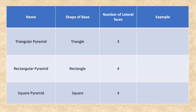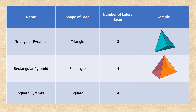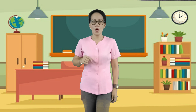Let's have another example of a solid figure: the pyramid. There are three examples of pyramids. The first one is a triangular pyramid, which has three lateral faces. Next is a rectangular pyramid, which has four lateral faces. The last one is a square pyramid, which also has four lateral faces. You have learned solid figures with different numbers of lateral faces.